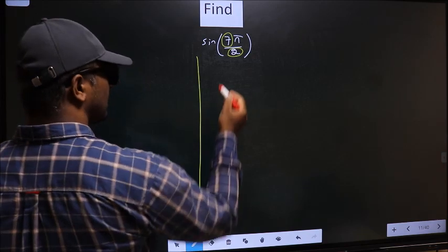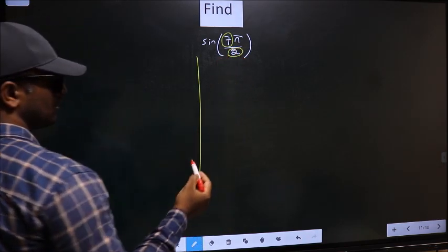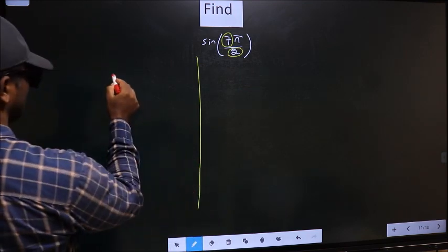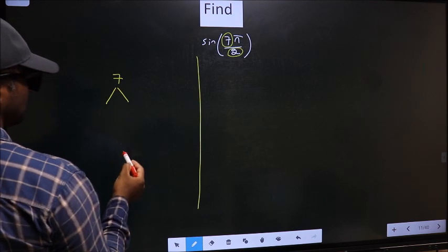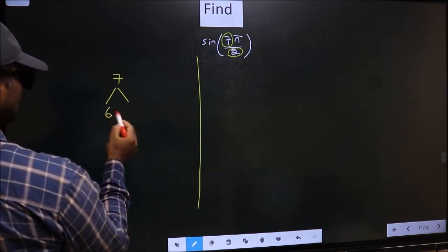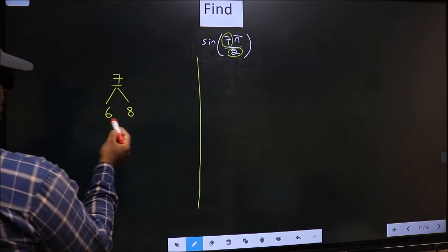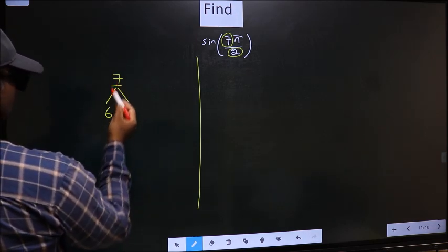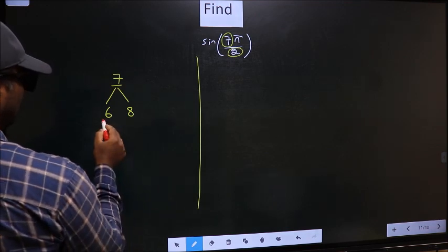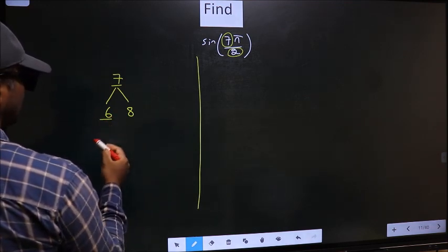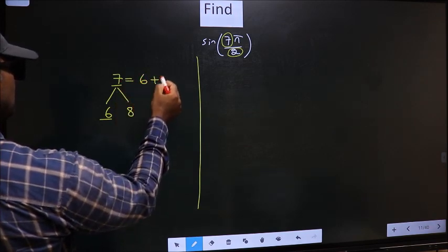Now you should check which multiple of 2 is closest to 7. What I mean is, write multiples of 2, that is 6 and 8. Now 7 is close to which multiple? It is close to both of them. So you select any one. Let's say I select 6. So now 7 should be written as 6 plus 1.